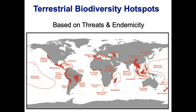We can also look at biodiversity hotspots — areas with really high levels of biodiversity. These include many rainforest areas, Mediterranean climate regions, and tropical islands with lots of endemic species found there and nowhere else.